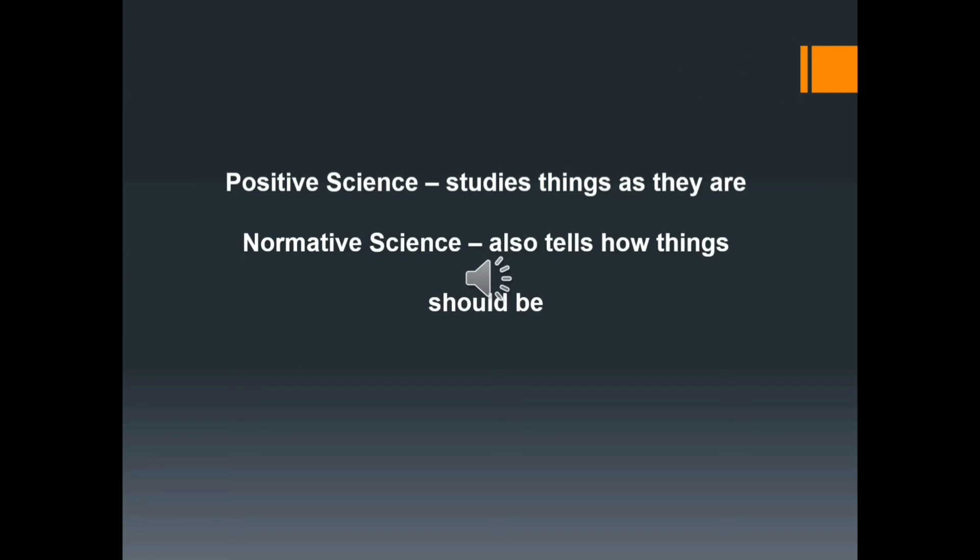And a normative science, besides studying the things as they are, they also tell us how the things should be. For example, we study the unemployment problem. This is the extent of unemployment. Economics also tells us, it gives suggestions on how we can overcome the unemployment problem. So a normative science, besides studying the things as they are, it also tells us how the things should be. If this is the extent of unemployment, if we do not take the given measures, then that is going to be the extent of unemployment in future. So a normative science not just tells us the things in the present, but it also kind of predicts things for the future.